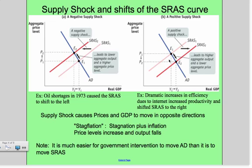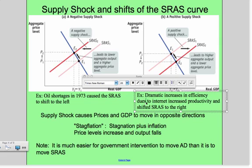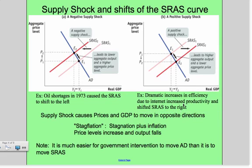Conversely, dramatic increases in efficiency due to the creation and use of the Internet in the very late 80s and through the 90s caused dramatic increases in productivity. The cost of producing went down, so supply increased. This graph shows it leads to higher aggregate output and a lower aggregate price level.